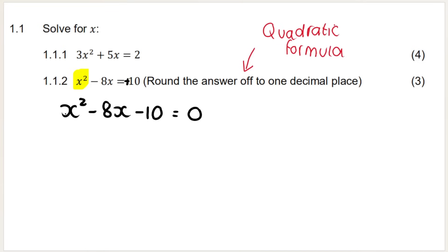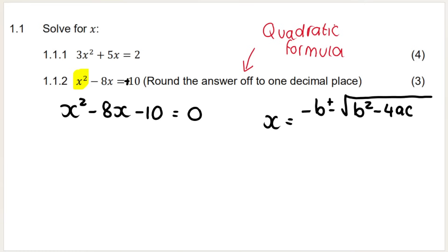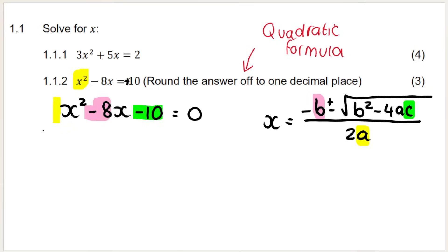The reason is because you can't factorize here like normal — if you try, you will not be able to. So you will come to the conclusion that you need to use the quadratic formula. x equals negative b plus or minus the square root of b squared minus 4ac, all over 2a. Remember: a is the coefficient of x squared — in this case 1. b is the coefficient and sign in front of the x term, so negative 8. And c is the constant term, negative 10.